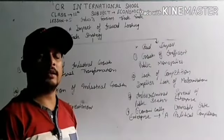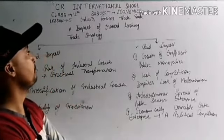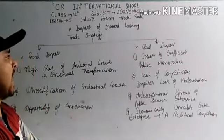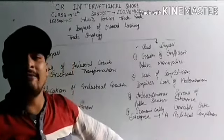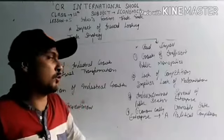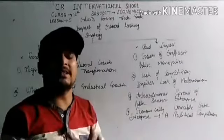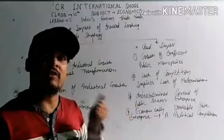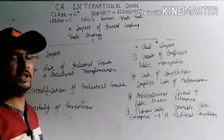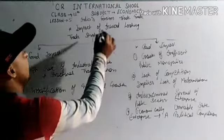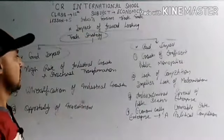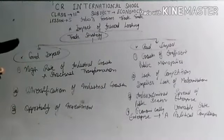Welcome to CR International School online study system. Today we are doing economics, lesson number five. The topic for discussion is the impact of inward looking trade strategy in India. The inward looking trade strategy, or the policy of production — also called import substitution policy — is a policy in which we protected our domestic industries. The impact of this policy has two kinds: good impact and bad impact.